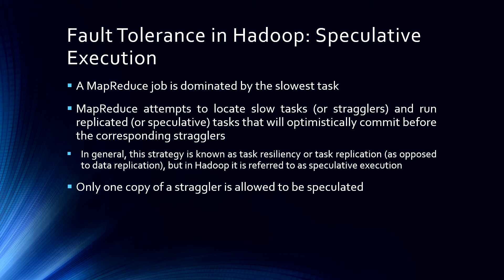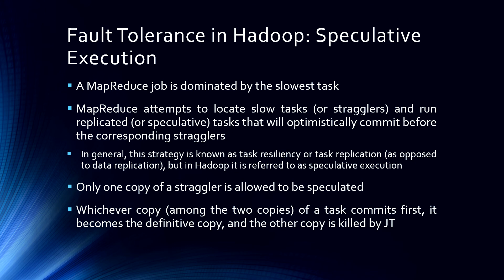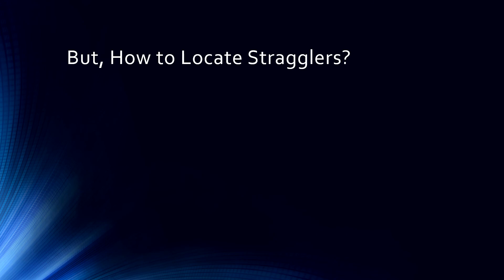Only one copy of a straggler is allowed to be speculated. Whichever copy among the two copies of a task commits first becomes the definitive copy — the other one is killed by the job tracker. So we are running the same task two times. Whichever task commits first is the winner; the other one gets destroyed by the job tracker. There are two task trackers running the same task, and whichever finishes first gets the winning point while the other's data gets destroyed.